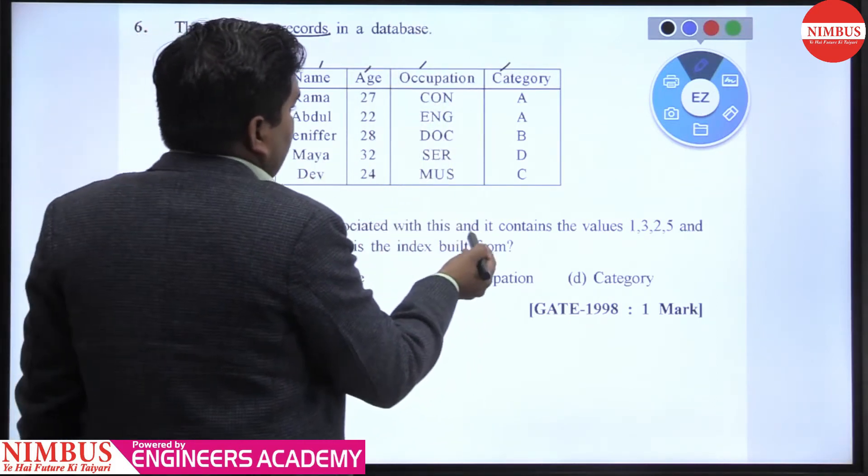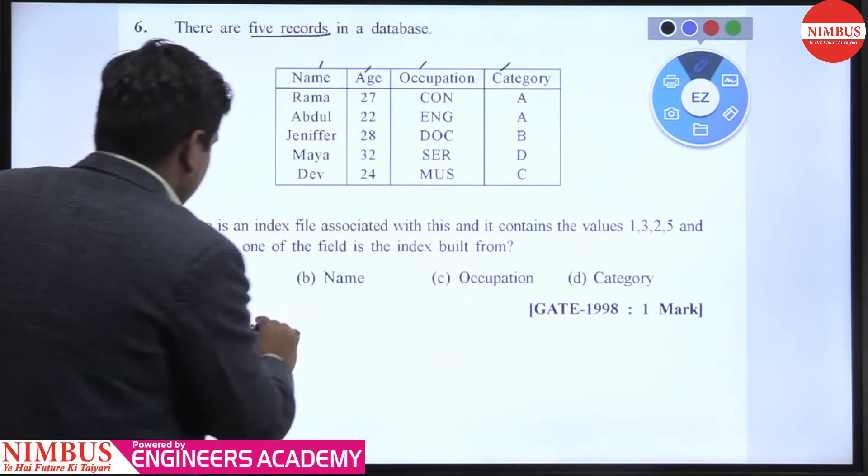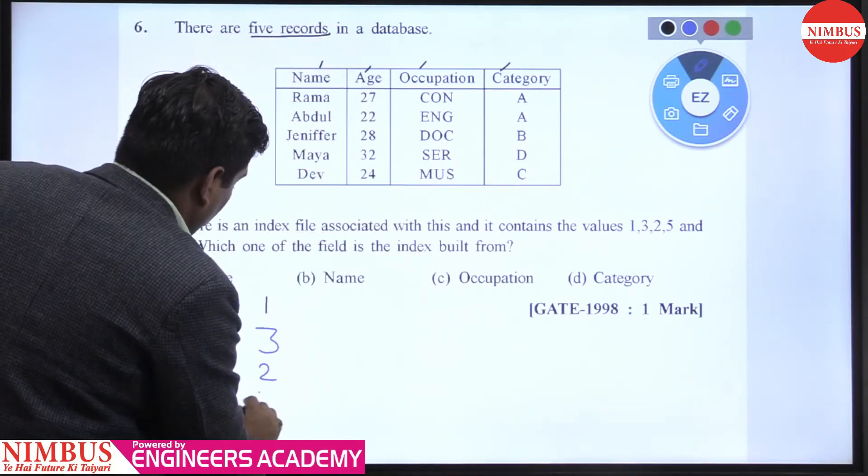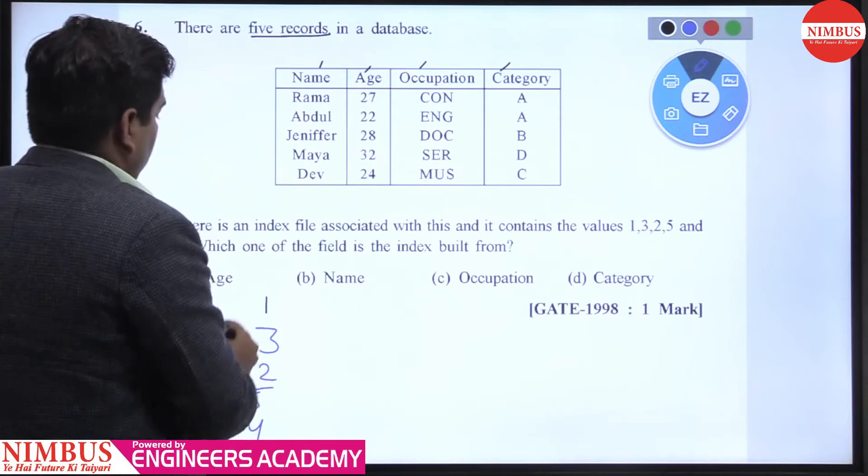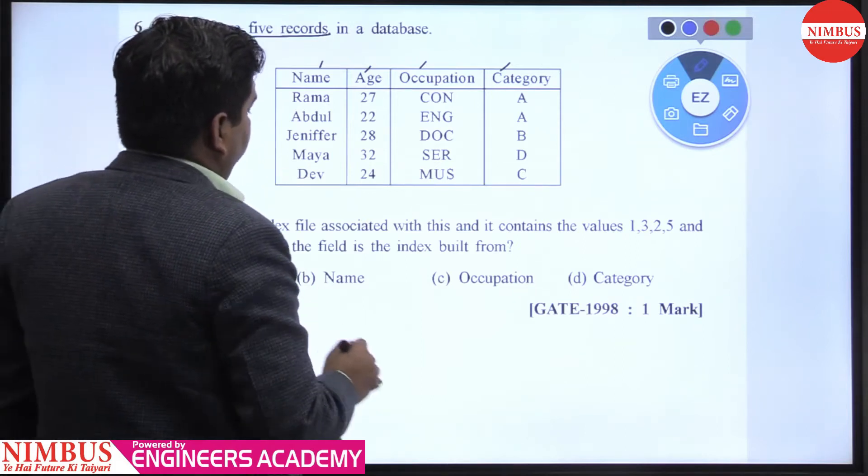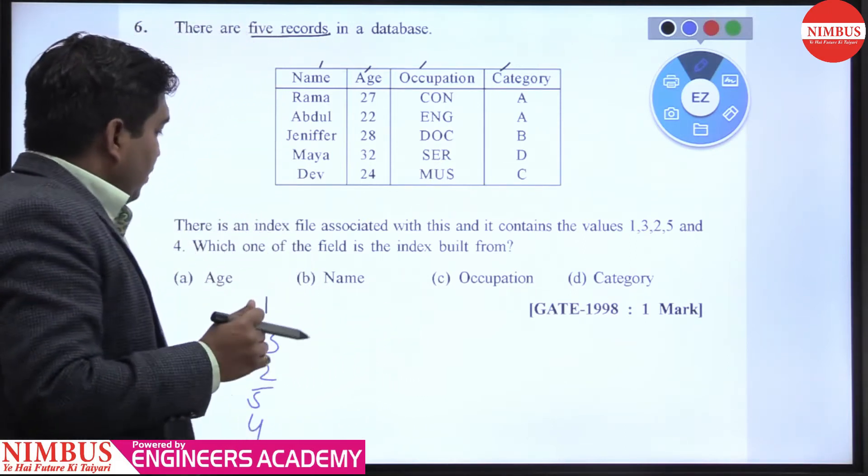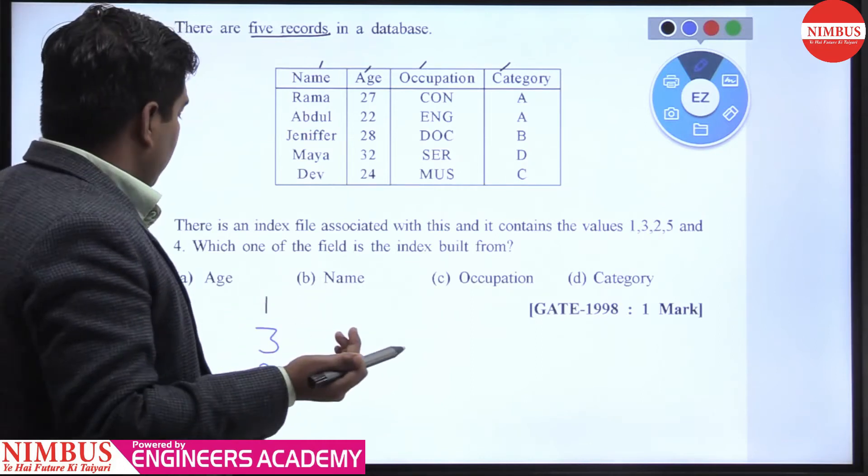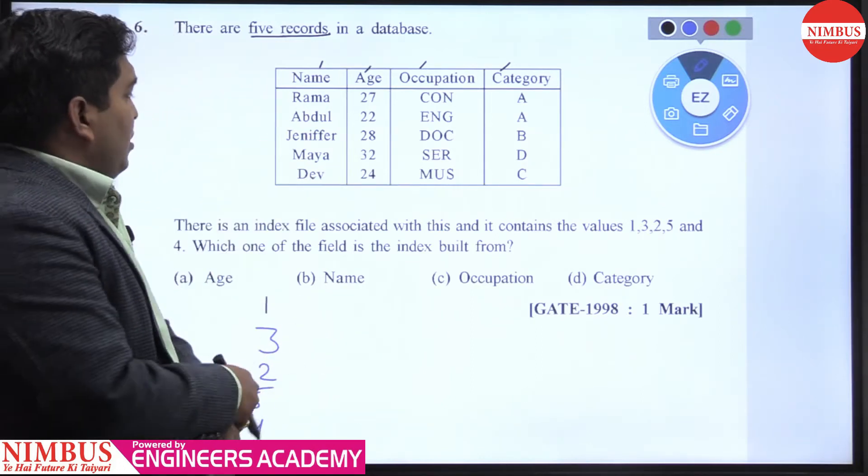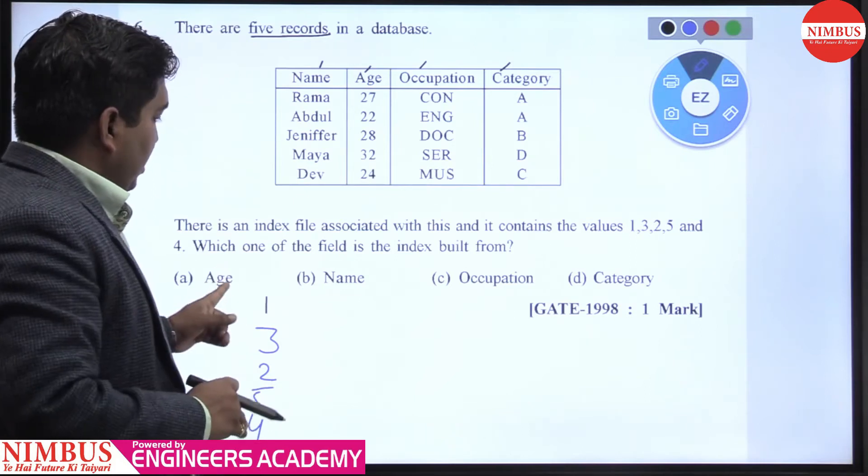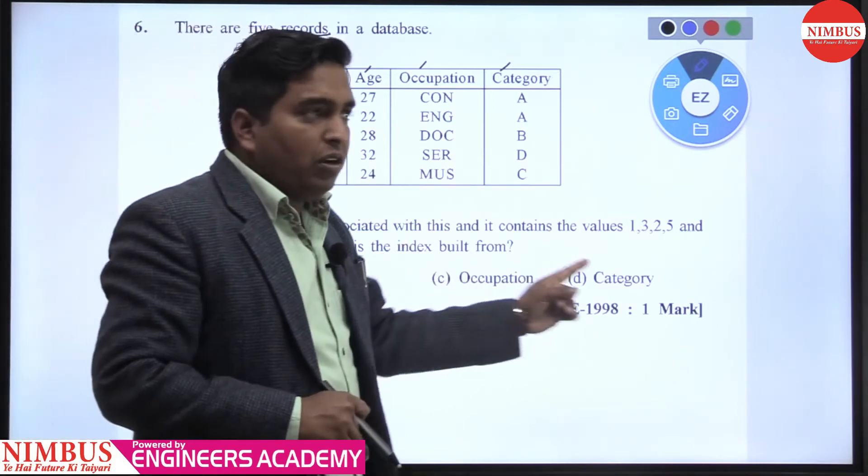There is an index file associated with this and it contains the values 1, 3, 2, 5, and 4. Now which one of the following fields is the index built from? He is asking about out of these four: age, name, occupation, or category.